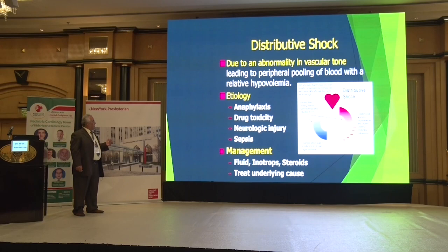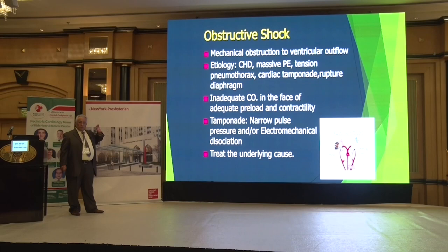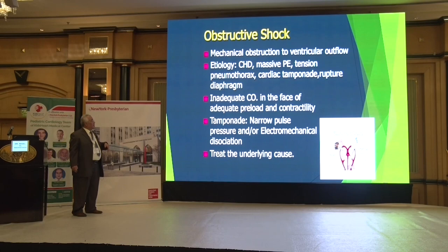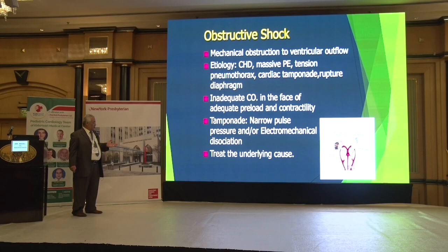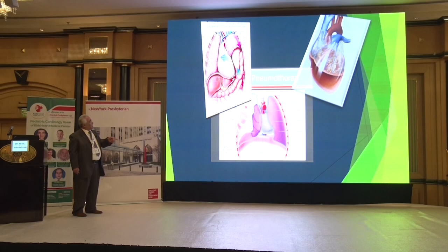Obstructive shock — remember, if you don't diagnose it you may lose your patient. There is a mechanical obstruction to ventricular outflow. Etiologies include congenital heart disease, massive pulmonary embolism, tension pneumothorax, cardiac tamponade, and ruptured diaphragm — all top emergencies. Cardiac output is inadequate despite adequate preload and contractility because there is obstruction. In tamponade, the pulse pressure will be narrow and you may find electromechanical dissociation. Treat the underlying cause.